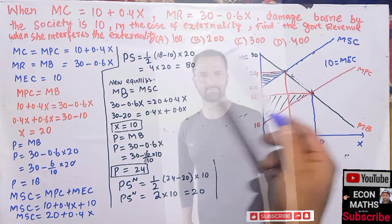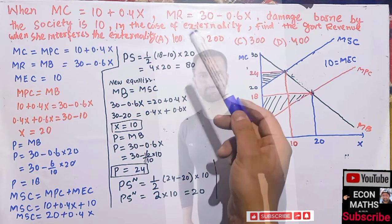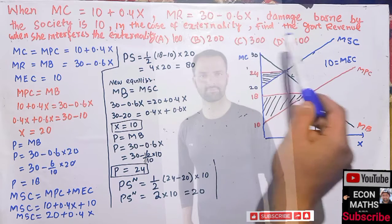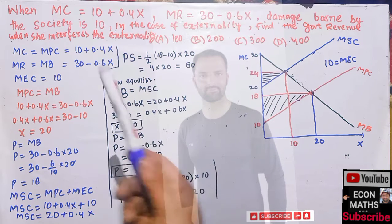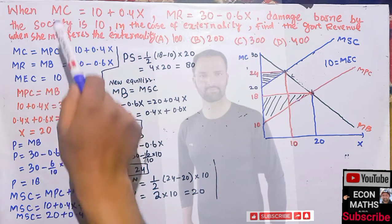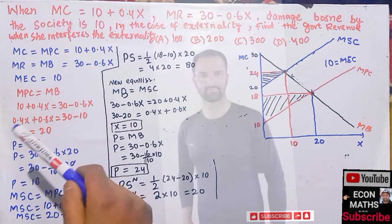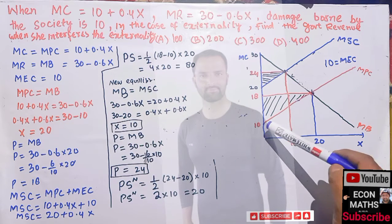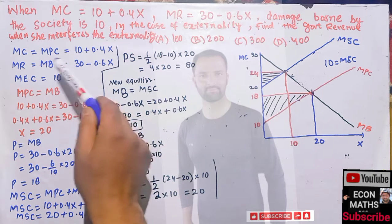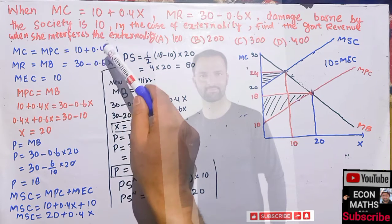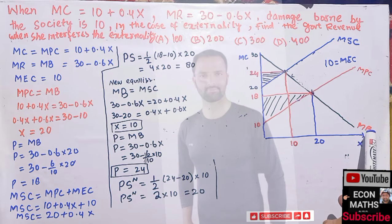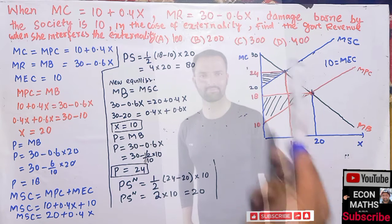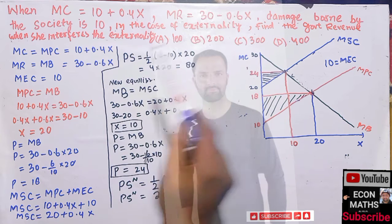We have to find the government revenue in the case of externality. The options are 100, 1200, 300, or 400. First of all, we take our marginal cost, which is also our marginal private cost. Its intercept is 10 and slope is 0.4. Our marginal revenue — what we call the marginal benefit curve or demand curve — has an intercept of 30 and a negative slope of minus 0.6x.